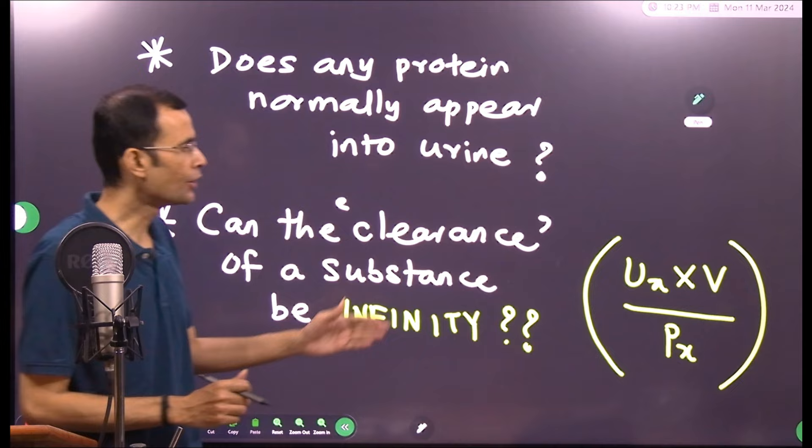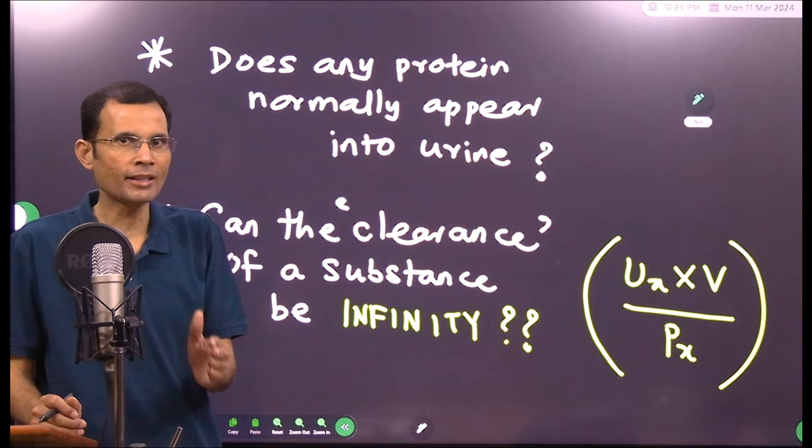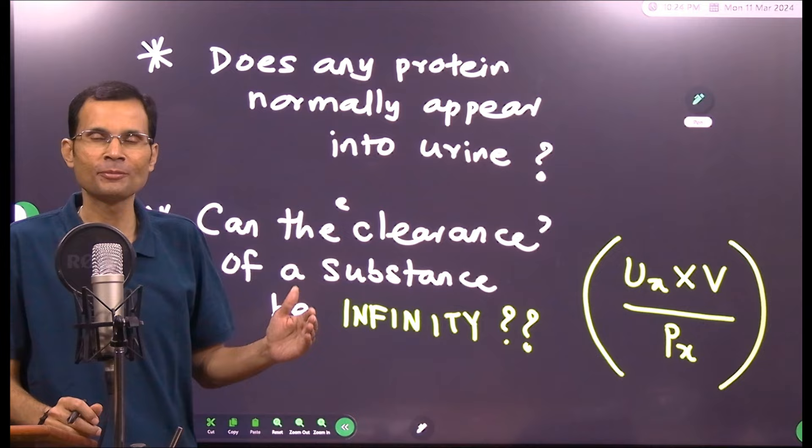So plasma concentration of that substance will be zero, and yet it is coming into the urine. Is that possible?